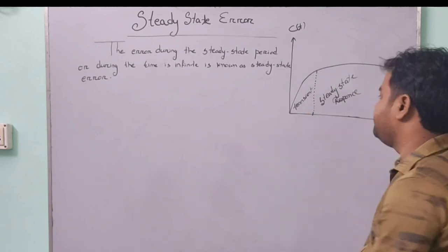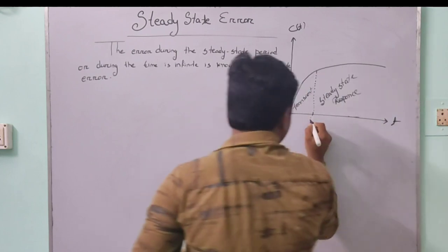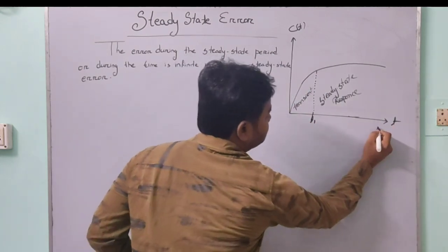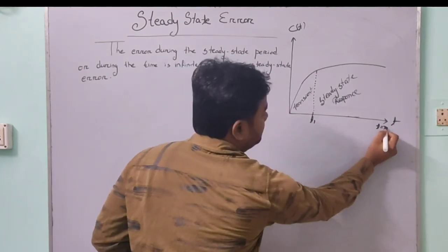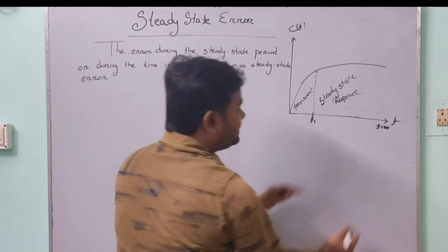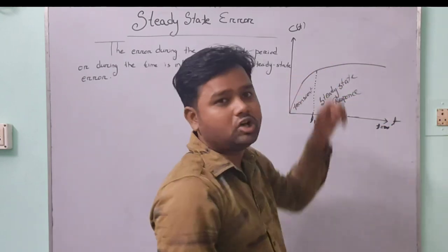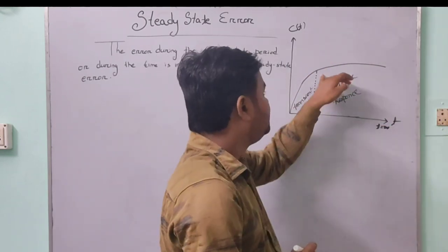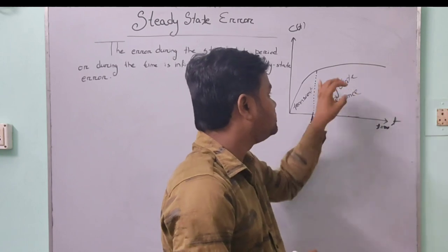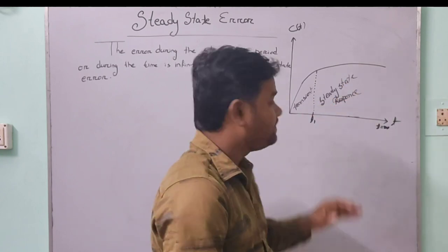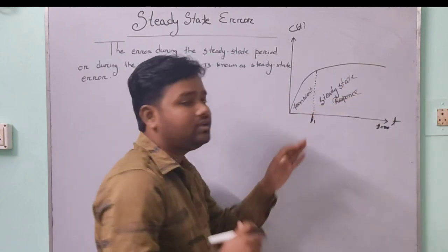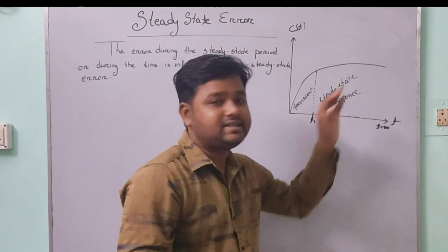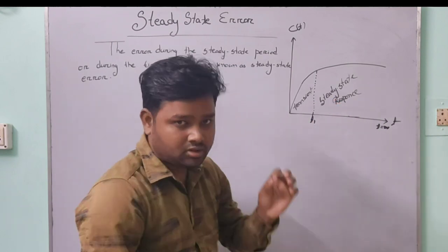After some time, from time t equal to t1 till t equal to infinity, by increasing the time the output does not change very rapidly. So this part is known as steady state response. We will study what is the error in this steady state response.